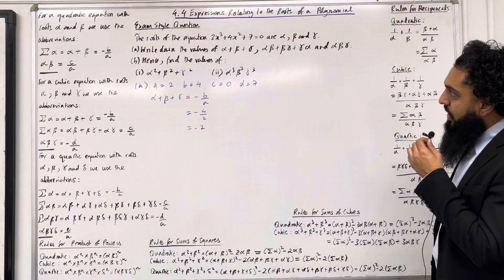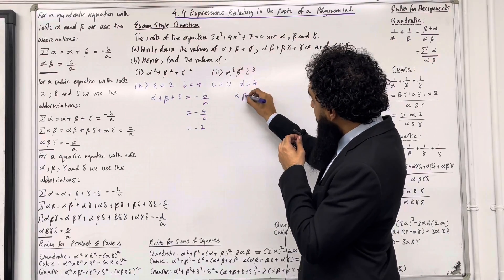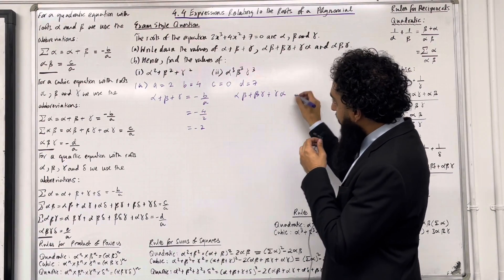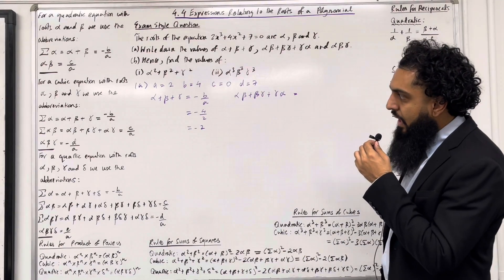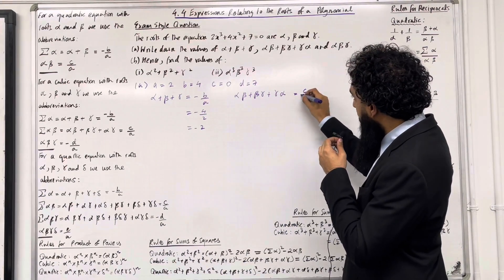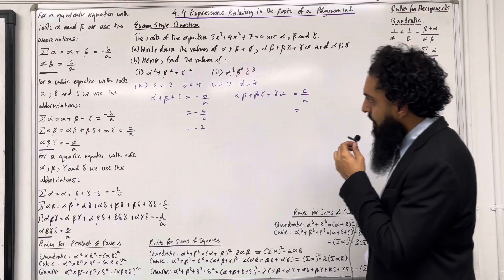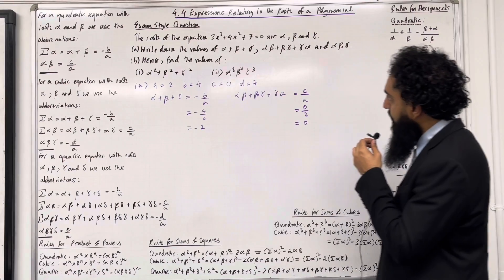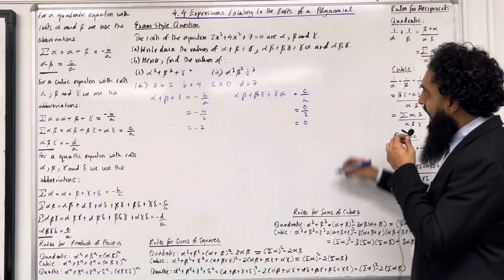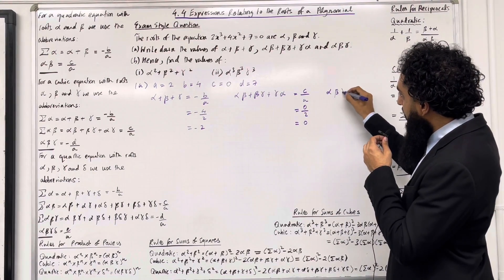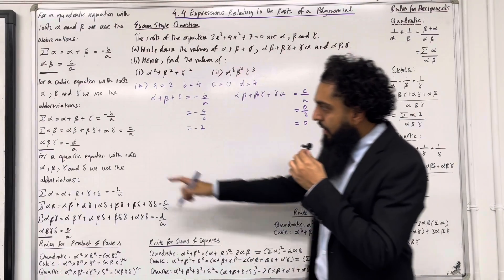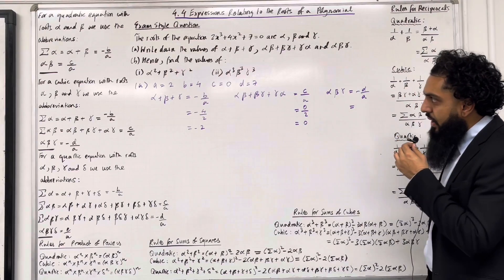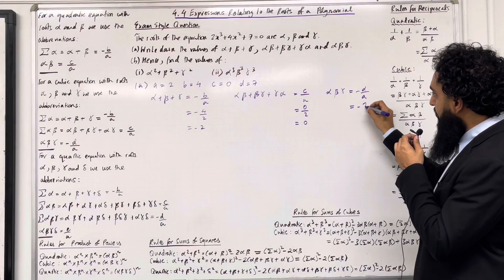Next up, we want to calculate alpha beta plus beta gamma plus gamma alpha. For a cubic, this is given by C over A. Substituting the values in, I get 0 over 2, which is equal to 0. Then we have alpha beta gamma, which is given by minus D over A, giving minus 7 over 2.